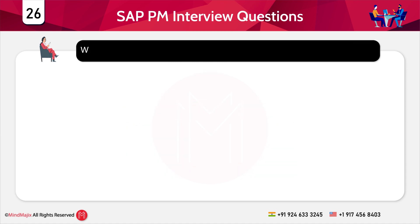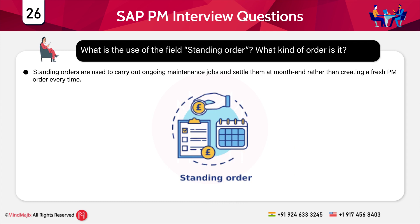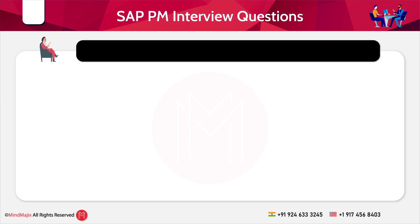What is the use of the field 'standing order' and what kind of order is it? Standing orders are used to carry out ongoing maintenance jobs and settle them at month end, rather than creating a fresh PM order every time. Using order hierarchies, you can attach sub-orders to the standing order and settle them to provide a more precise record of maintenance costs at the sub-order level as well as budget monitoring at the standing order level.